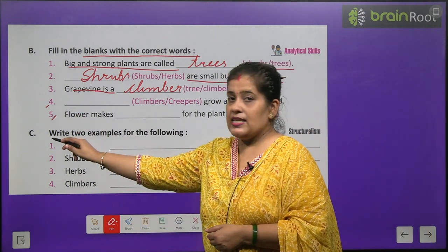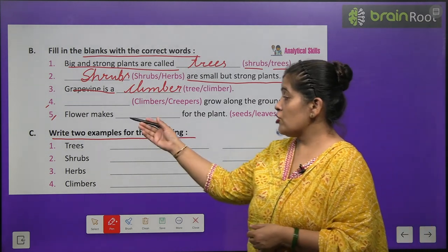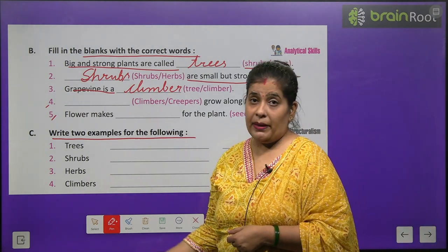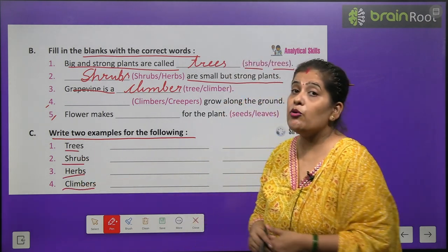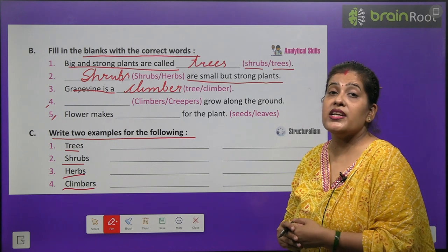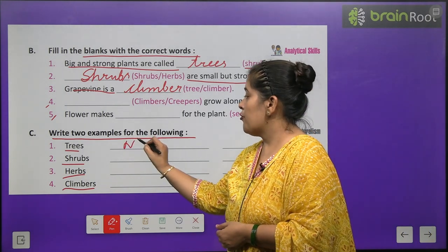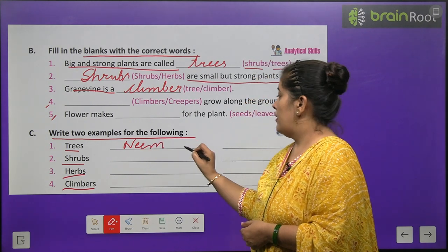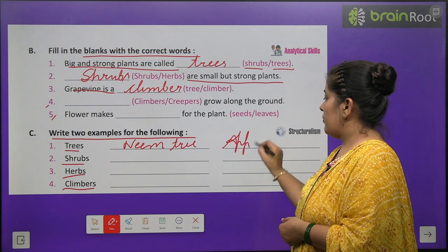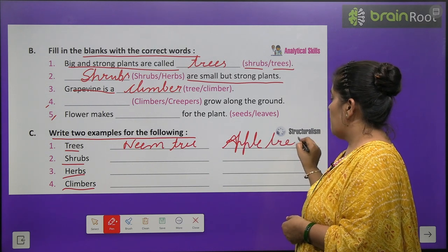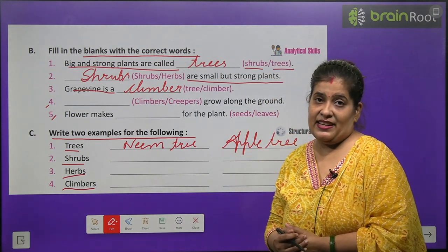Now exercise C — write two examples for the following. Yahan pe aapko kuch naam diye hue hain — tree, shrubs, herbs, or climbers. Aapko kya karne hain? Inke do-do examples likhne hain. Jaise trees — neem tree and apple tree. Aise hi aapko do-do examples shrubs, herbs, or climbers ke likhne hain.